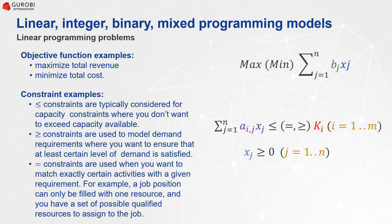Other types of constraints include greater-than-or-equal constraints, used for example when we want to ensure at least a certain level of demand is satisfied. We can also have equality constraints, used when we want to match activities exactly with a given requirement — for example, a job position that can only be filled by one resource from a set of qualified candidates.